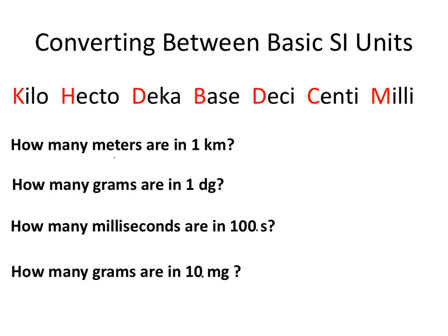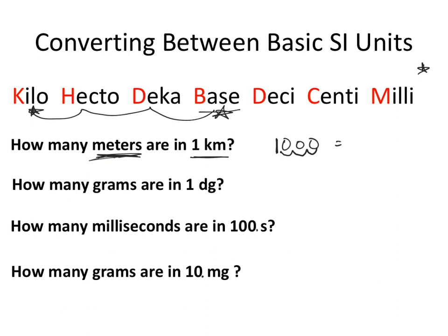If we look at meters and want to convert from kilometers to meters: meters is the base unit, and we're going from kilo to the base. Starting with one kilometer, we count one, two, three spaces to the right. So we move the decimal point three spaces to the right, giving us 1,000. There are 1,000 meters in one kilometer.